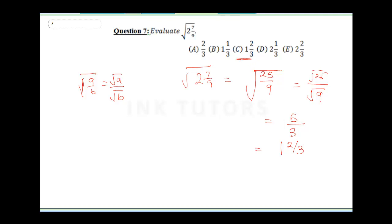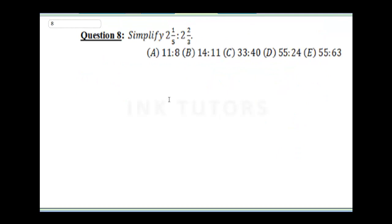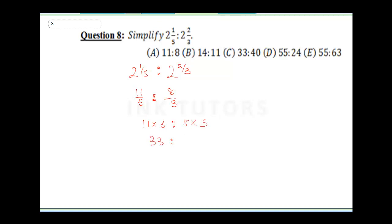Question eight: Simplify the ratio 2¹⁄₅ : 2²⁄₃. Convert to improper fractions: 2¹⁄₅ = 11/5 and 2²⁄₃ = 8/3. To simplify the ratio, cross-multiply: 11 × 3 : 8 × 5 = 33 : 40. The final answer is C.